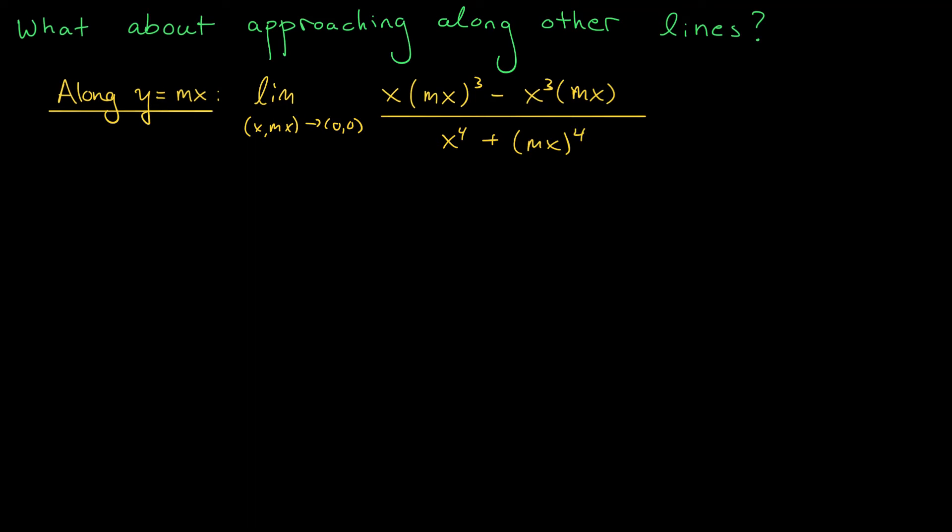Now, this time, my numerator is not 0, but I could probably expand it and clean it up a little bit. Specifically, I have the limit as (x,mx) goes to (0,0), and in the numerator, I get m³x⁴ minus mx⁴ divided by x⁴ plus m⁴x⁴.